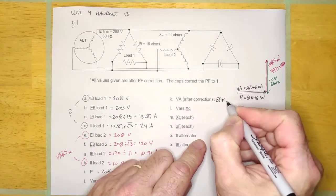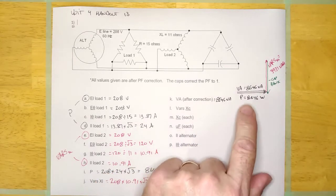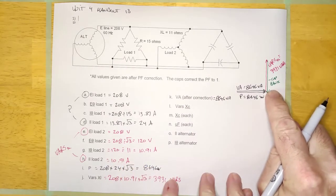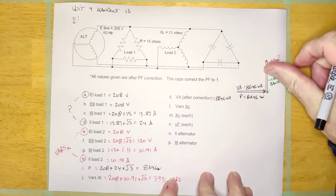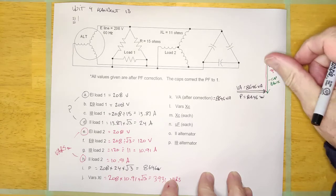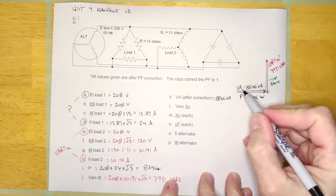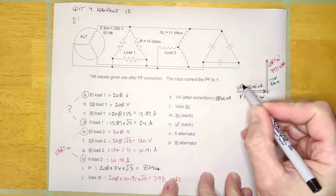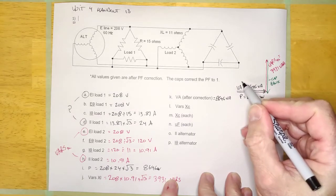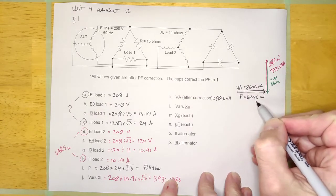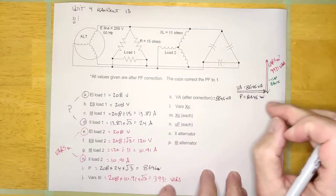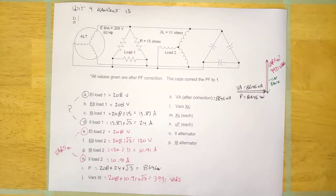If I was correcting to 90%, I'd have my 8,646 watts, my vars XL, and my vars XC coming down part of the way from the capacitor bank. Then I'd have my power factor of 0.9 and I could calculate the VA by dividing the watts by 0.9. So correcting to 0.9 works the same way, just looks a little different.